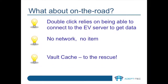The simplest way though is just to double-click on an item. There's at least one catch, though. What happens when you're on the road or in a situation where you don't have an internet connection? The problem with the normal approach of double-clicking on an item is that the Enterprise Vault Outlook add-in needs to connect to the Enterprise Vault server to get the item from your archive. Without a network connection, no item can be retrieved.